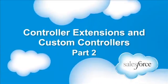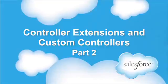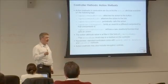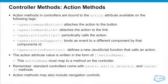Let's talk about action methods. We've talked about getters, setters, and properties. Now there are many different components available to you to call your action methods — here is a partial list. These components have action attributes which identify the method that we would like to call.